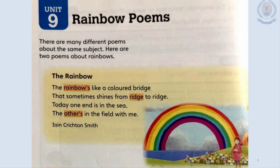Let's look at the second line: 'That sometimes shines from ridge to ridge.' As the poet says, the rainbow is shining from a long narrow hilltop to another hilltop. The last two lines: 'Today one end is in the sea, the other's in the field with me.' So today the poet can see one end of the rainbow at the sea and the other end in the field with the poet.